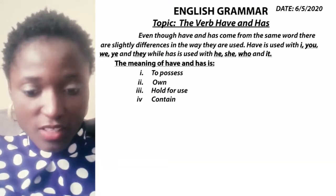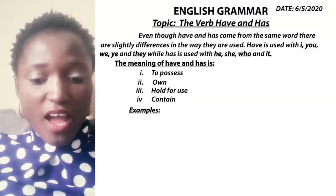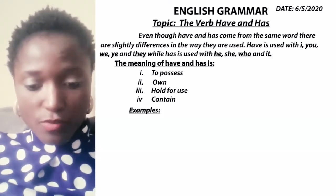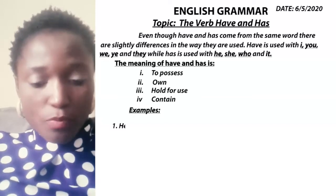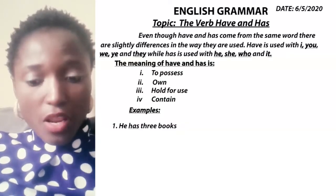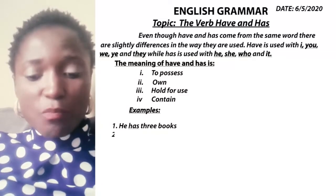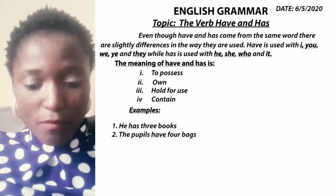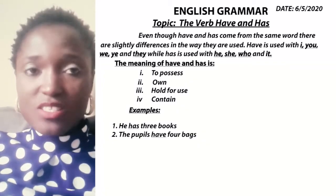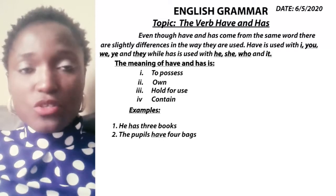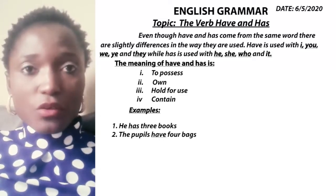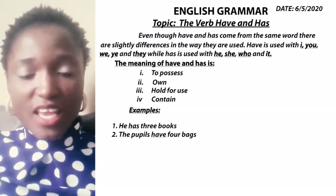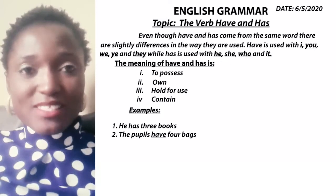Now let's look at examples of how we can use have or has. He has three books. Number two, the pupils have four bags. The pupils there is a noun — it is not a pronoun. One represents singular. When something is more than one, it represents plural. Pupils represents plural, which means they are more than one.